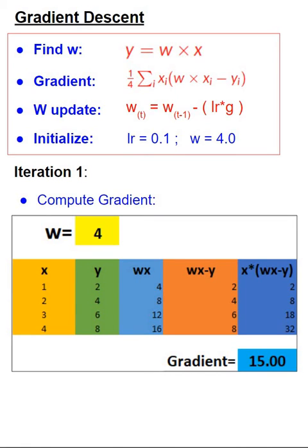The value of x and y columns are shown here, and also we are calculating the wx column, wx minus y column, and x times (wx minus y) column. The gradient, as per the formula shown above, is then the sum of x times (wx minus y) divided by 4, which is what we are doing here, and the value of such a computation comes to 15.00.